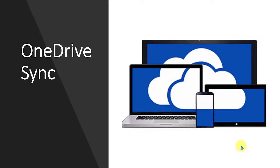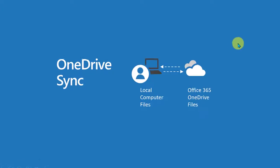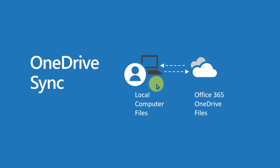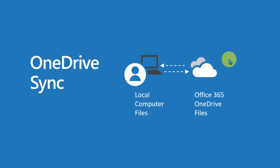In this video we will take a look at OneDrive Sync. OneDrive Sync allows you to synchronize files from your local computer to Office 365 OneDrive and vice versa. If you edit a file on Office 365, those changes will be synced to your local computer, and if you make changes on your local computer, those changes will be synced to Office 365. You can access your files on any device at any time, and changes will instantly synchronize between a single device and the cloud.